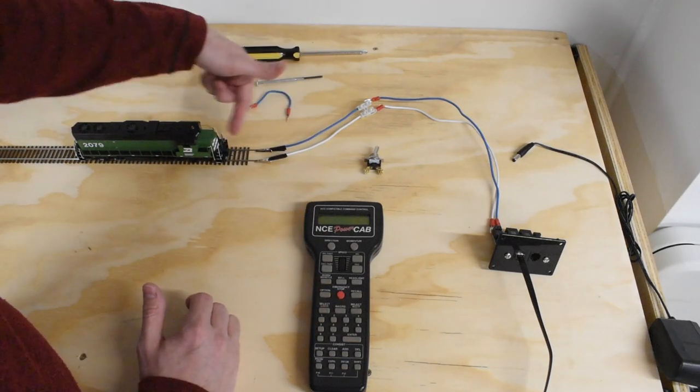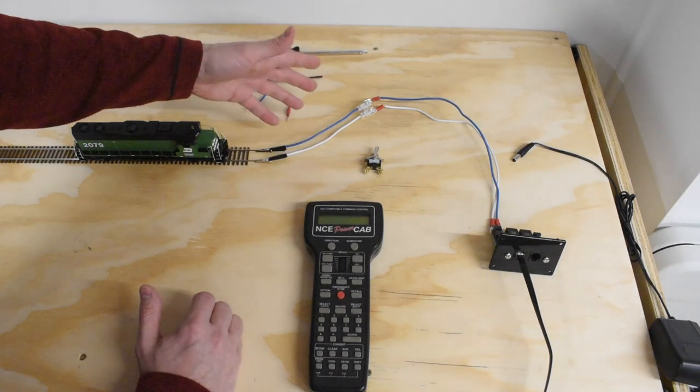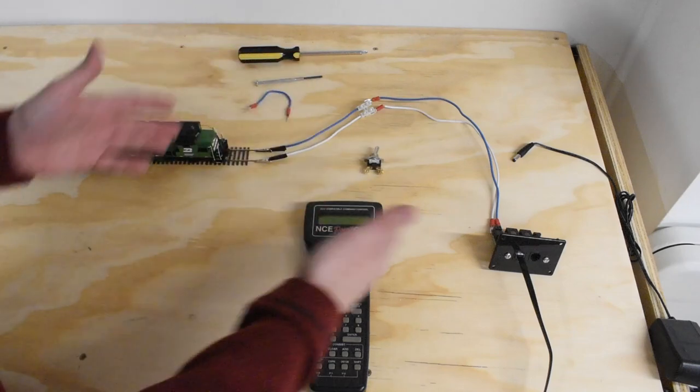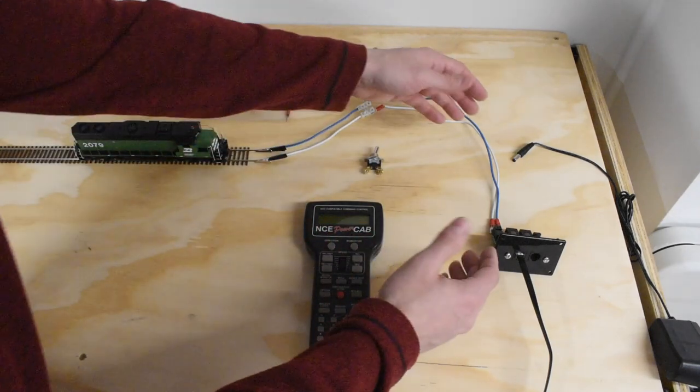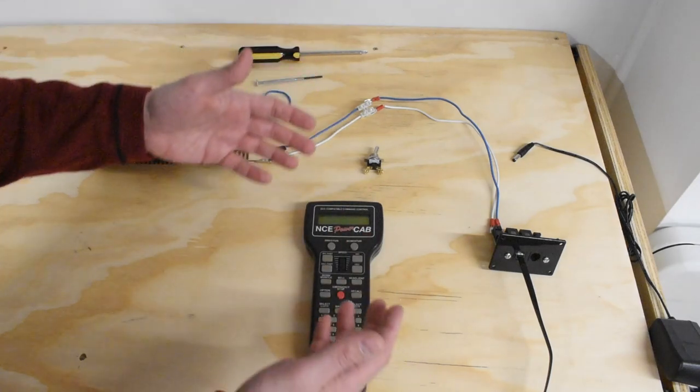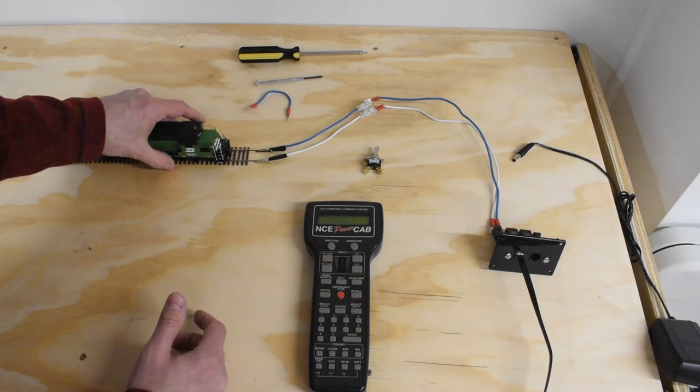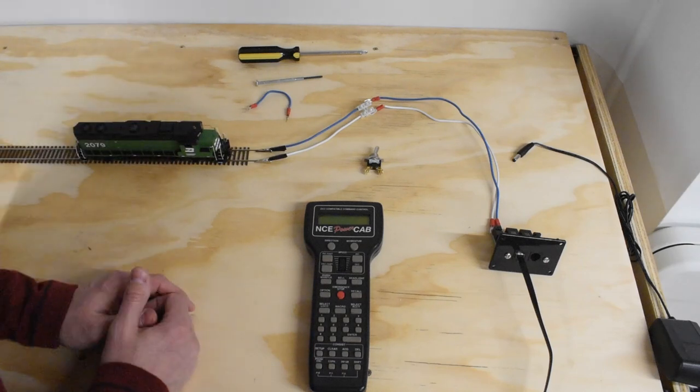To understand what's going on here, we have a circuit that at this point in time is closed, meaning none of the wires are severed. Electricity can flow around the circuit the way it's supposed to. This is going to draw power the way it's supposed to.